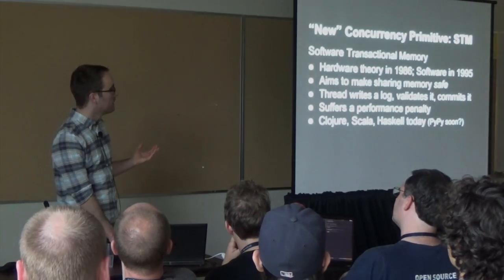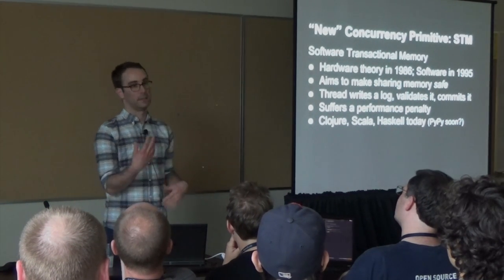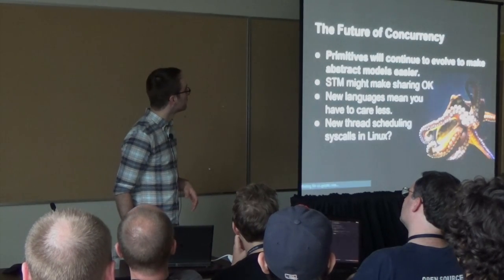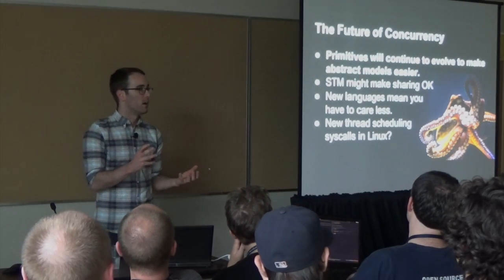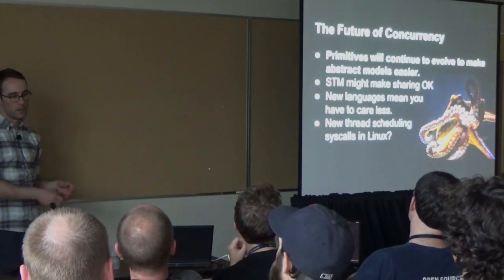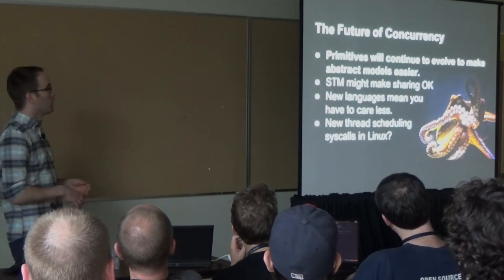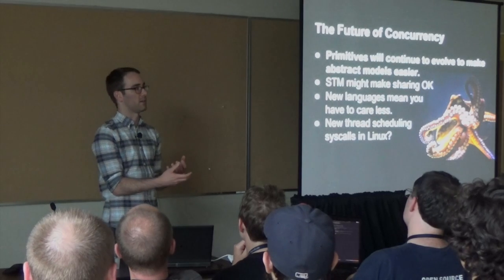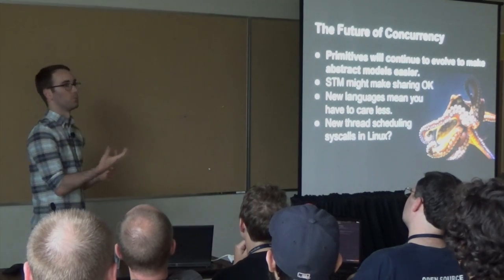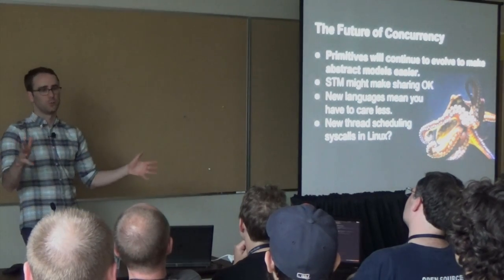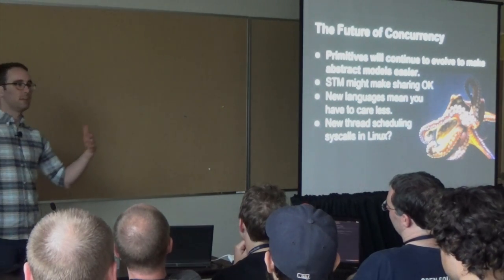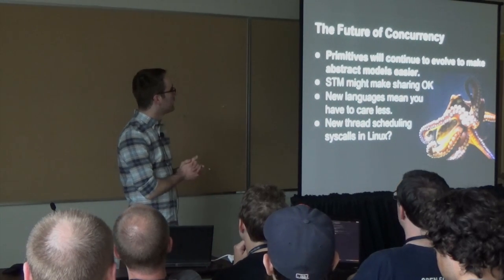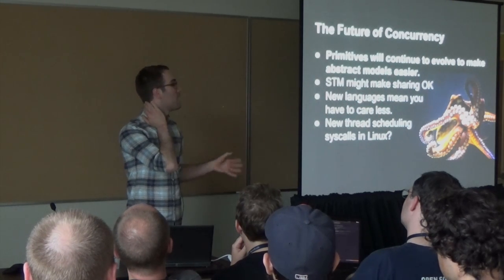Clojure, Scala, and Haskell all have software transactional memory today. The PyPy implementation of Python has some really interesting proof-of-concept work being done, which could allow parallelism within Python. In general, the future of concurrency is mainly that we're going to keep seeing more sophisticated models like the actor model, CSP, and probably STM become primitives within new languages. That's what we've seen with Go, Dart, and Rust — they've baked really complex ideas right into the language, which is encouraging because it makes them much more readily available.